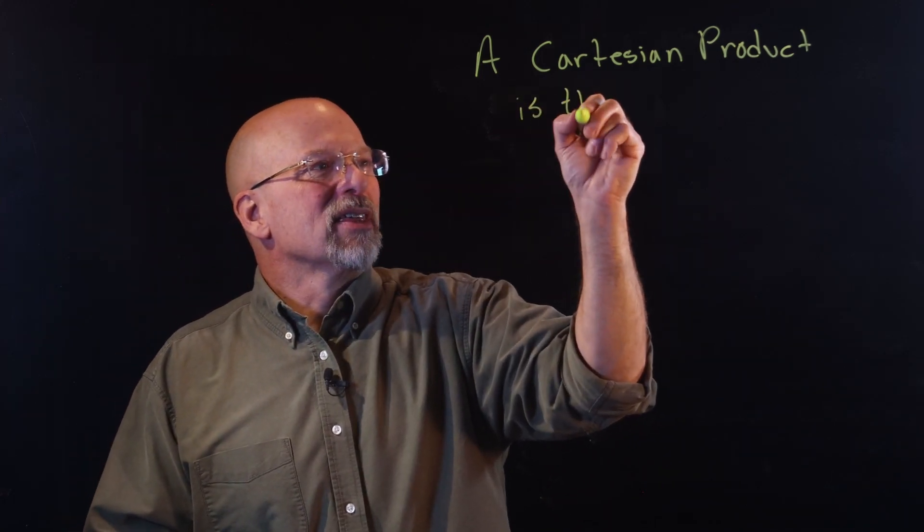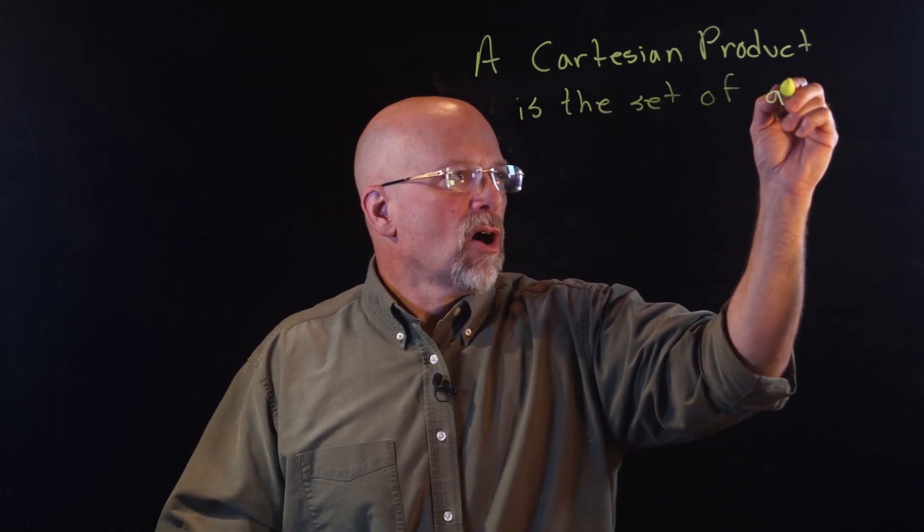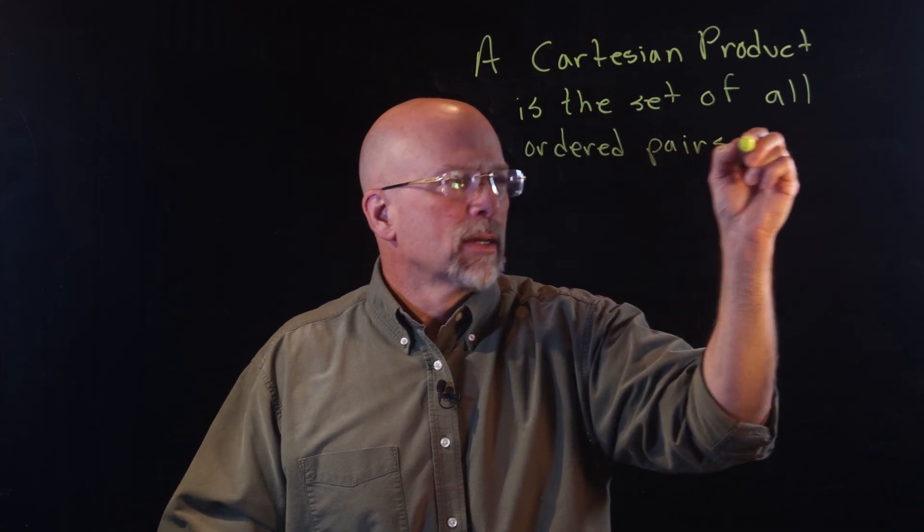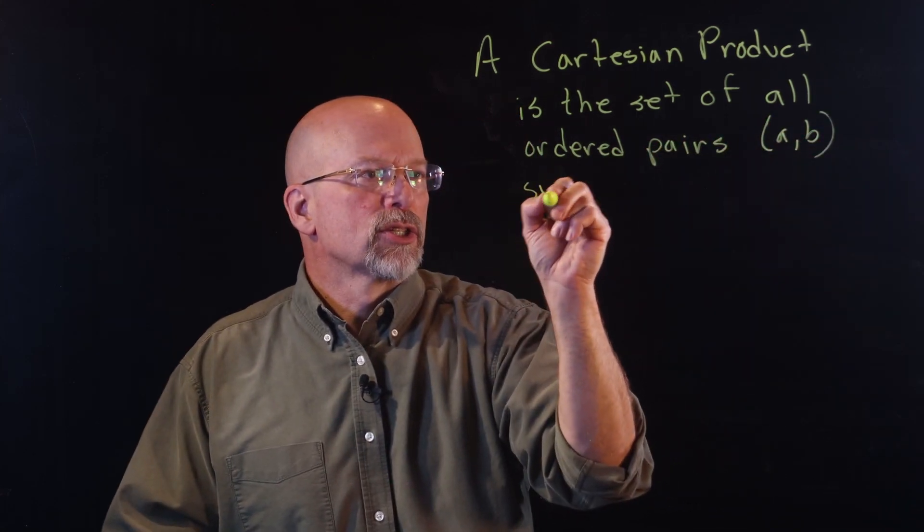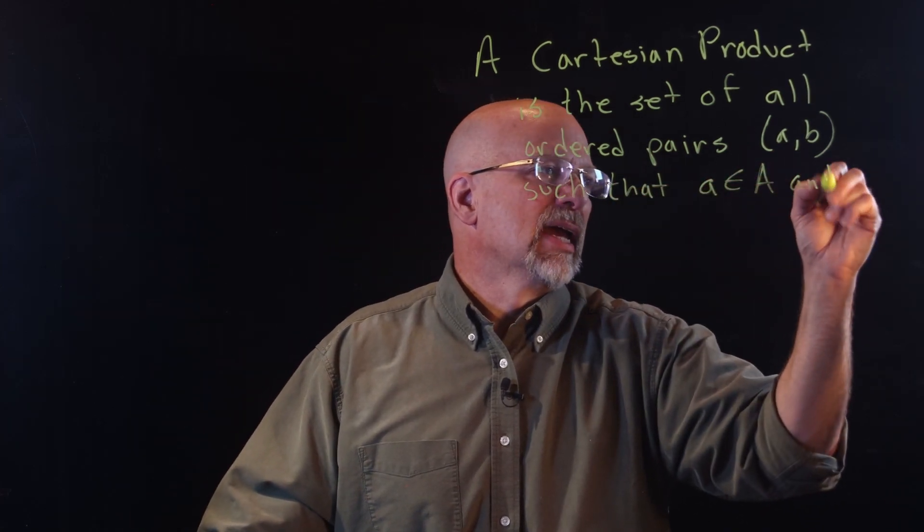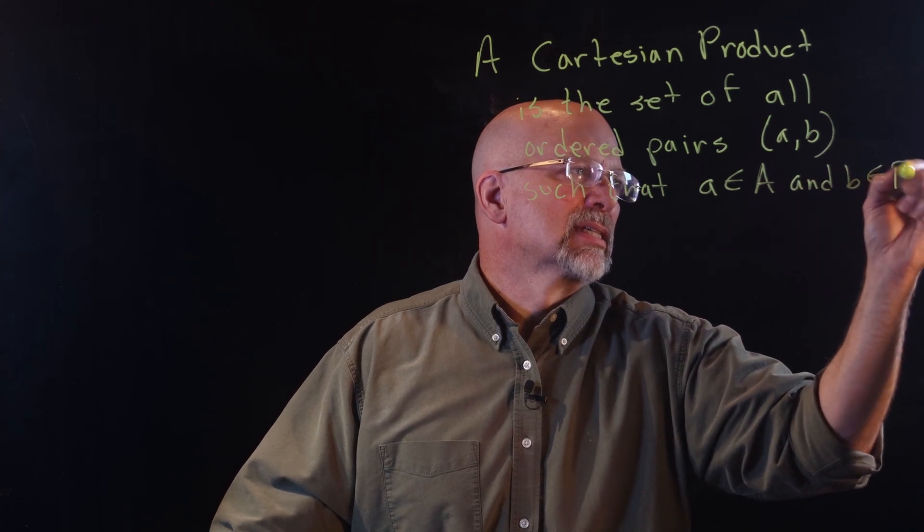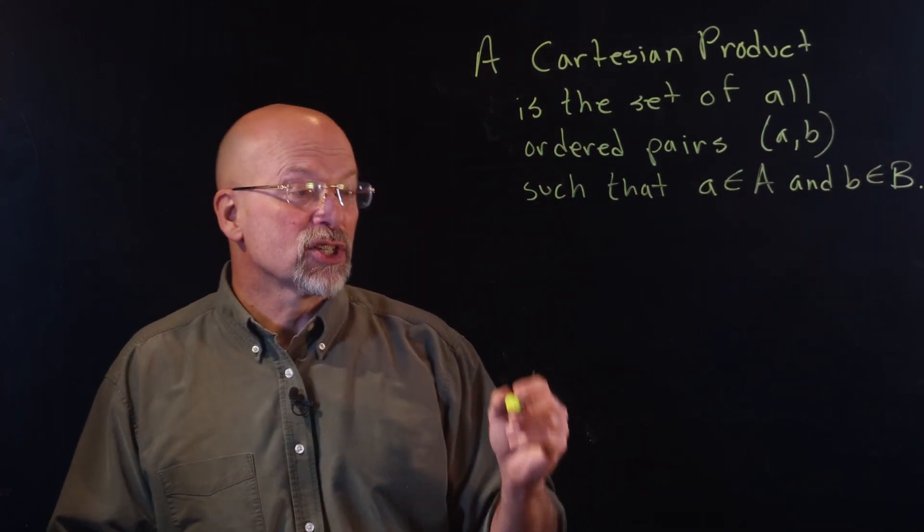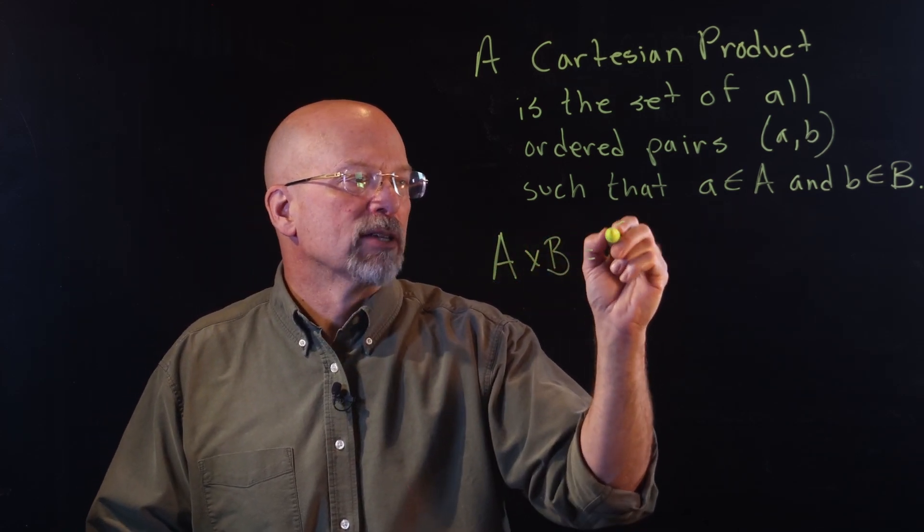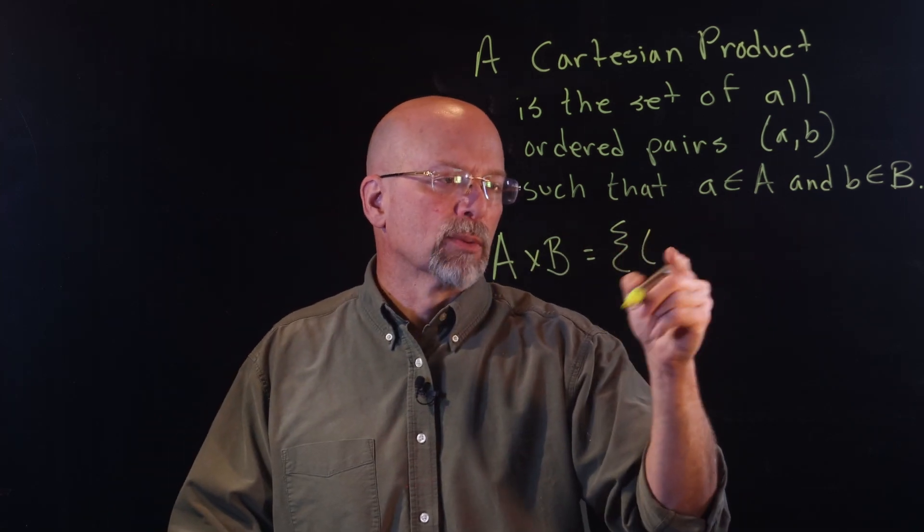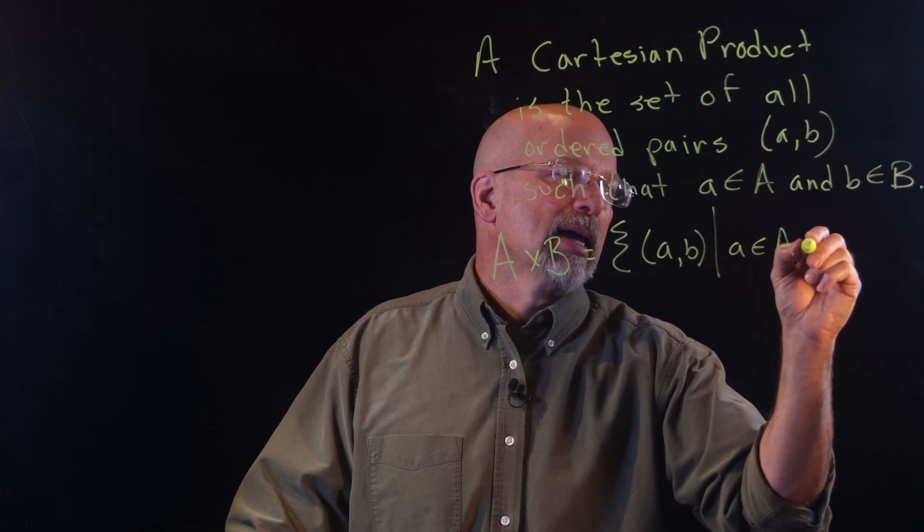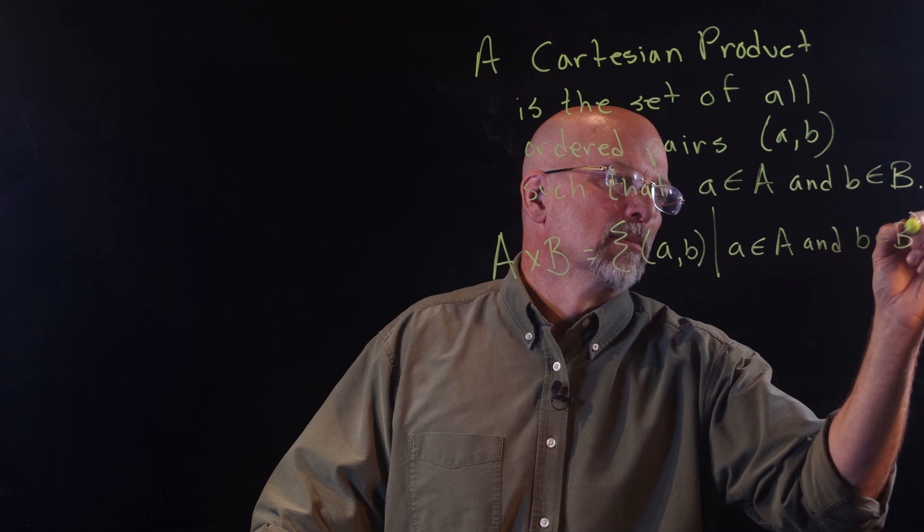Well, what does the Cartesian product equal? Well, a Cartesian product, and this name Cartesian comes from Rene Descartes, is the set of all ordered pairs (a, b) such that a is in a set A and b is contained in the set B. Now the Cartesian product of two sets, A and B, is represented with A cross B. And so A×B is equal to {(a, b) where a is in A and b is contained in B}.